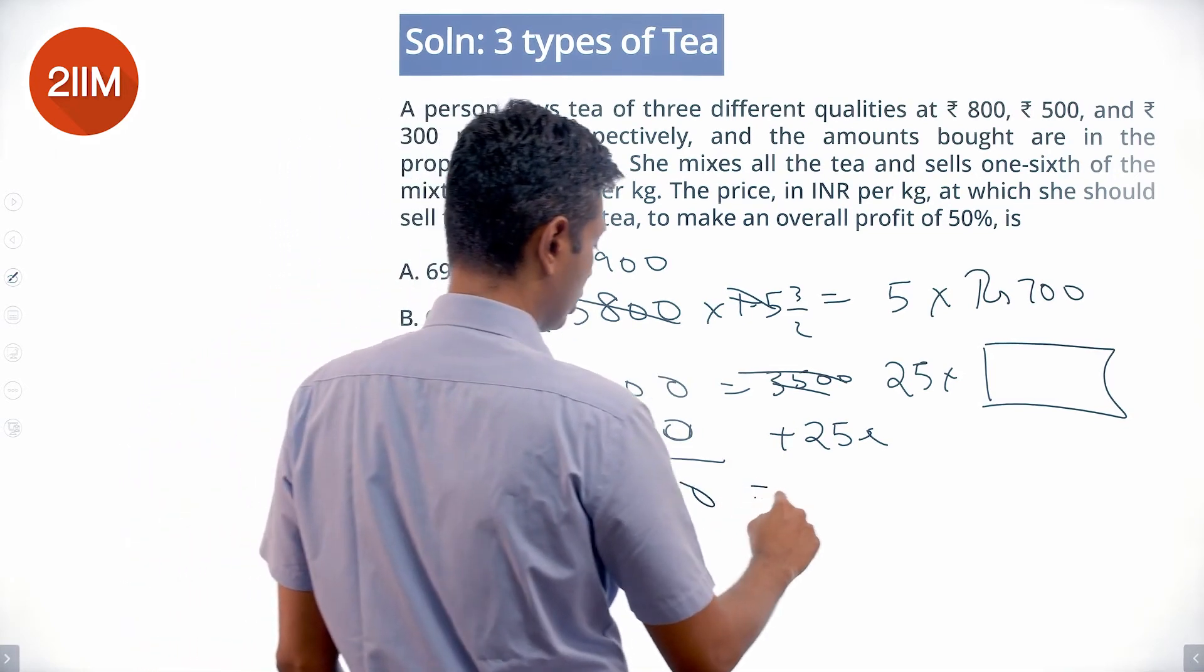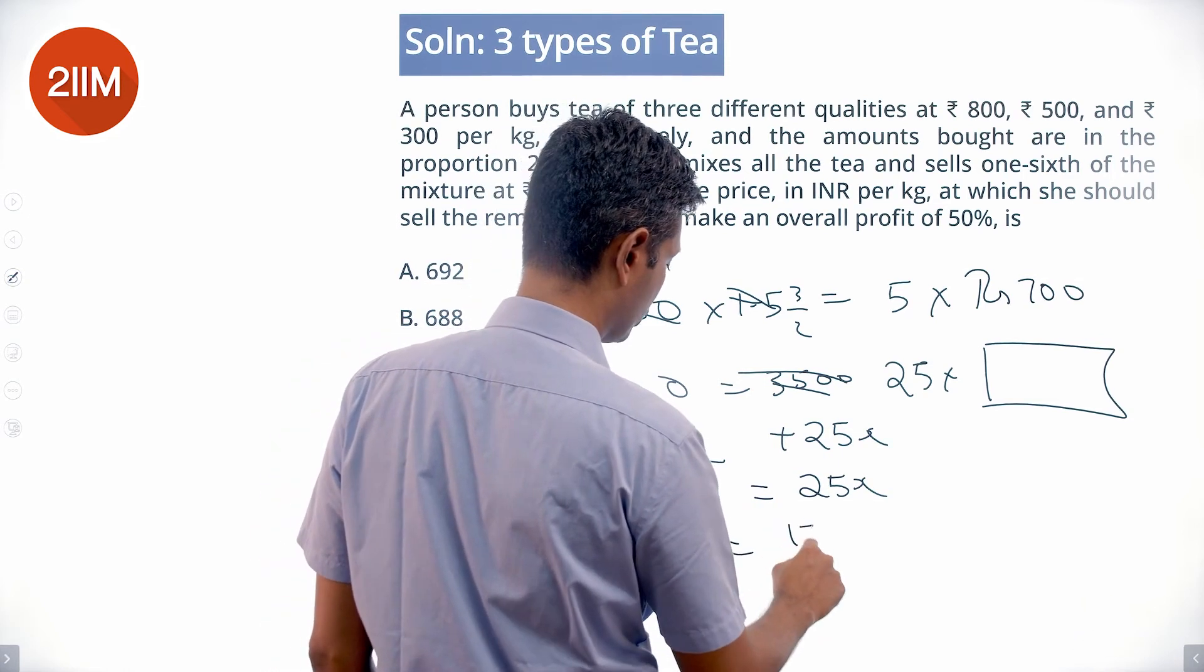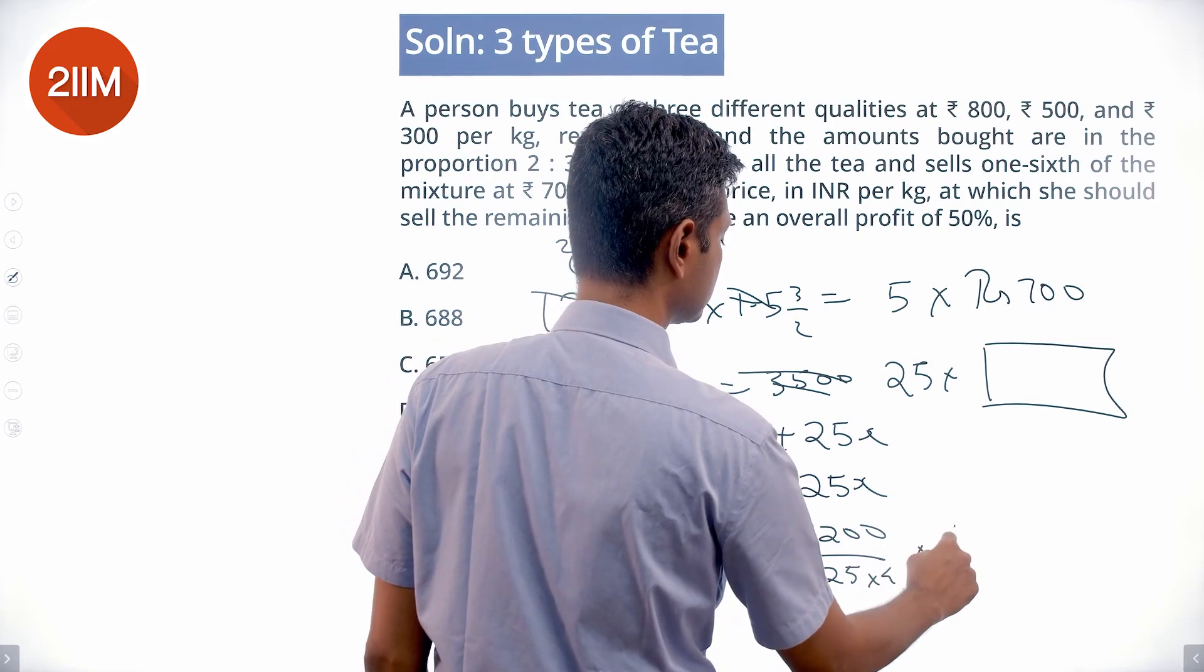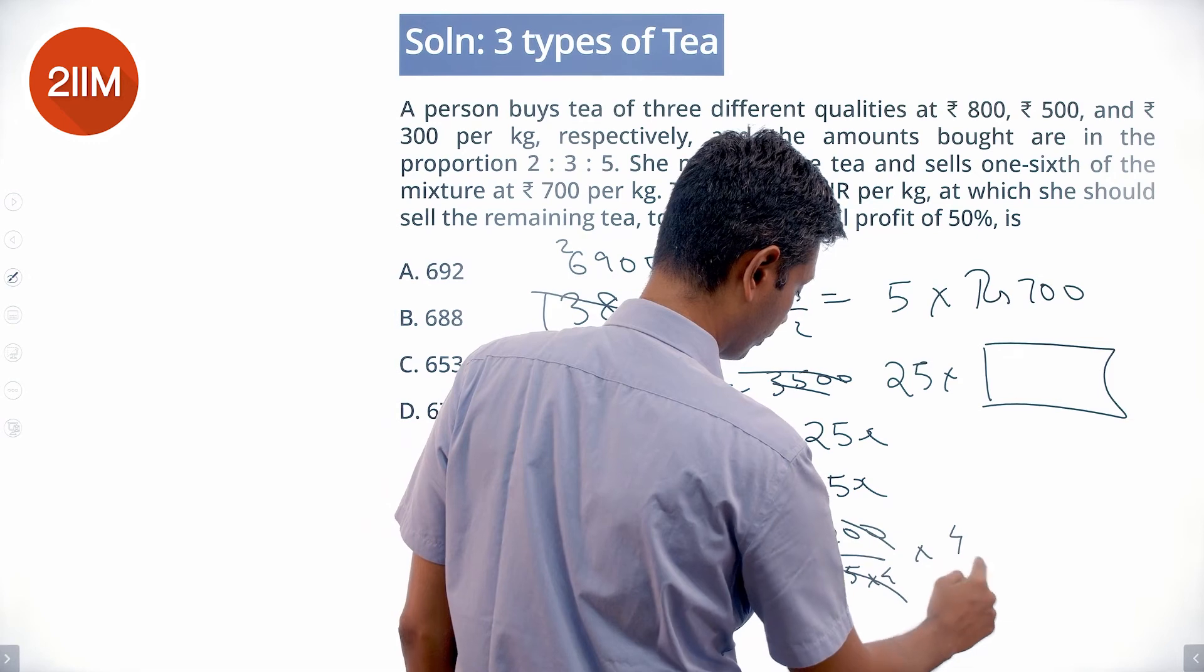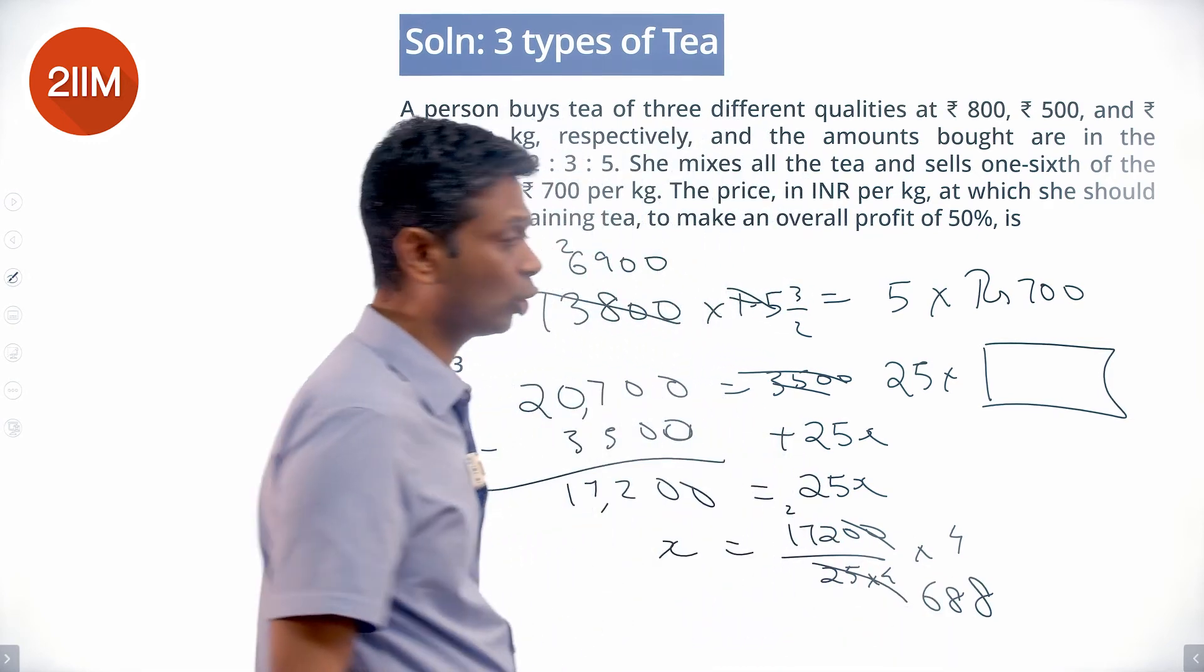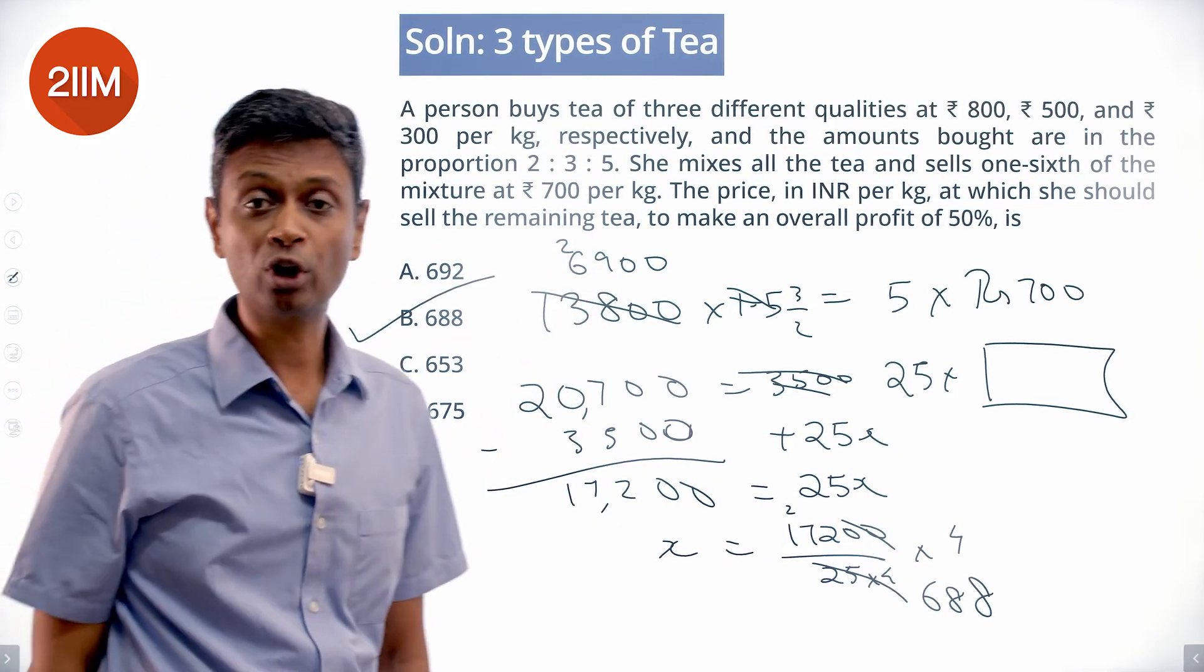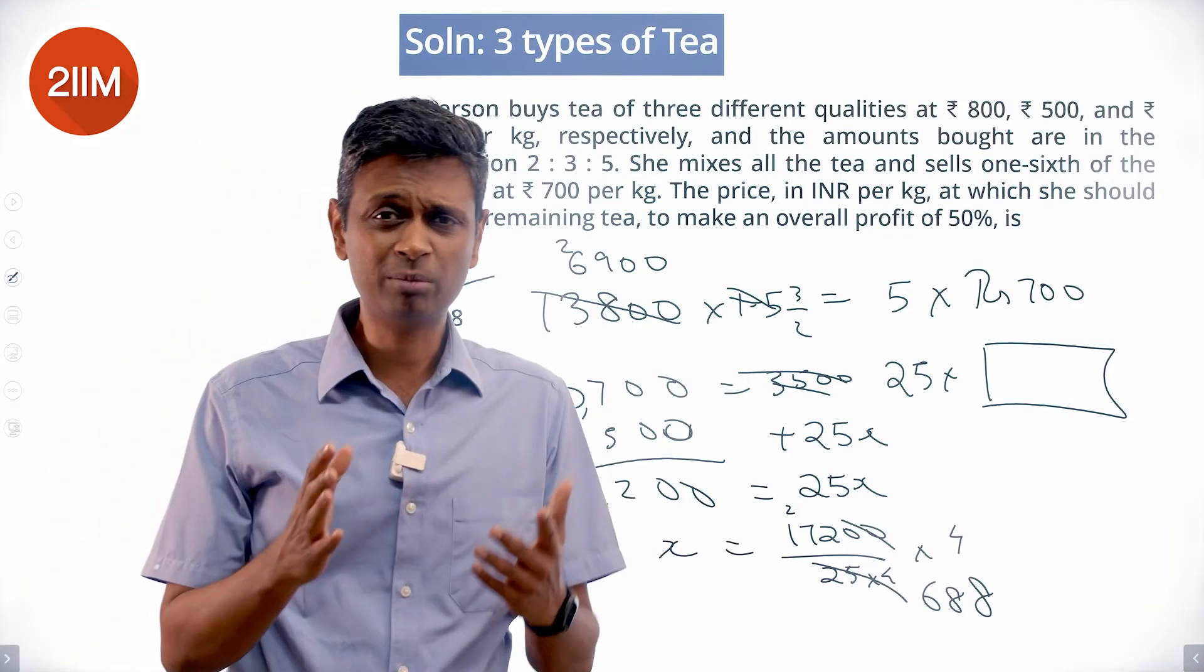17,200 equals 25x, or x equals 17,200 divided by 25, and luckily that is among our choices: 688.